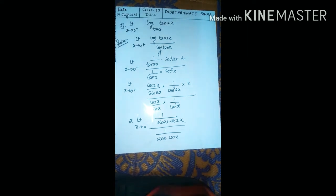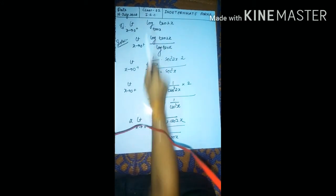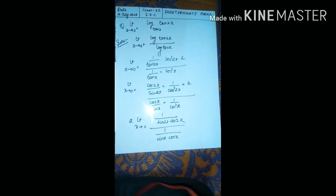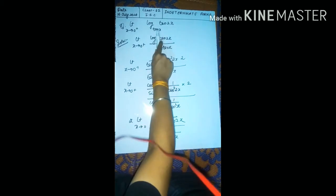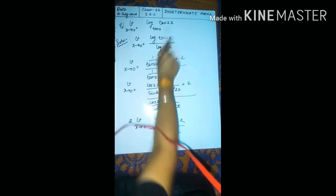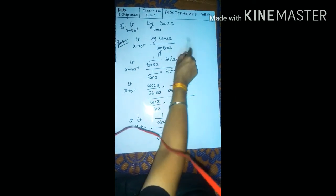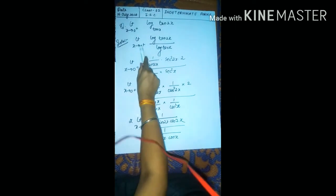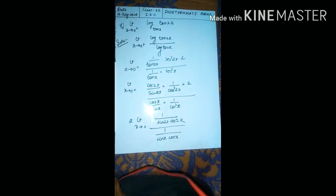Let us take this question: given limit x→0 of log₁₀(2x) to the base 10x. First, note this is of type ∞/∞ form. We can use the property log_b(a) = log(a)/log(b), so this becomes log(2x)/log(10x). If you put x→0 in the limit you will get ∞/∞ form, so we have to use L'Hôpital's rule.